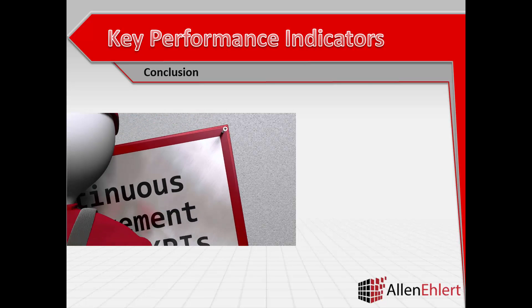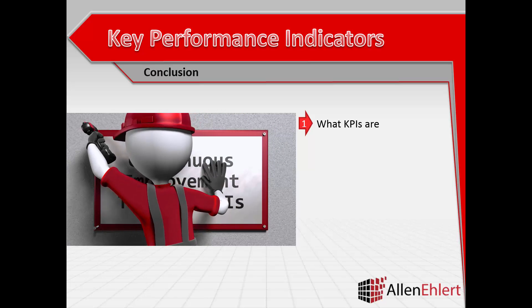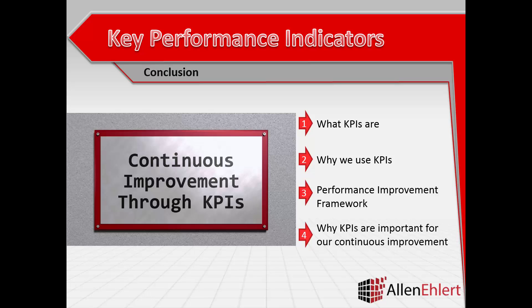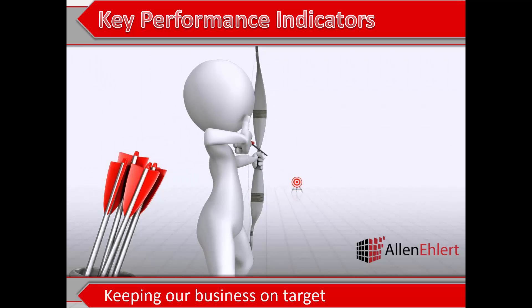In this presentation, we discussed what KPIs are, we defined what a Key Performance Indicator is, and we reviewed a few examples. We looked at why we use KPIs and our business drivers for implementing them. We talked about our performance improvement framework, DMAIC, and how KPIs play a key role in measuring our success. Finally, we looked at why KPIs are important for our continuous improvement and how they drive our diligent efforts to deliver value to our customer. Key Performance Indicators — keeping our business on target. The successful measurement of Key Performance Indicators is critical to innovation and continuous improvement in any organization. Thank you for watching. I'm Alan Ehlert. We'll see you next time.